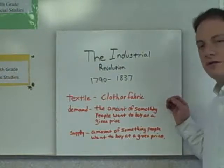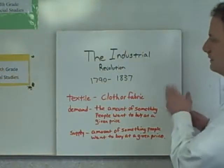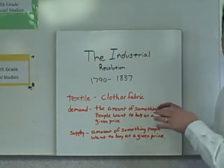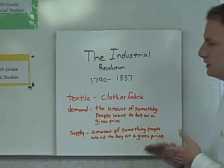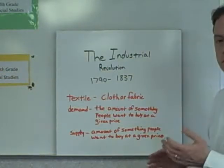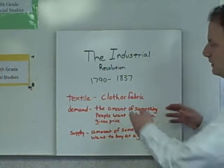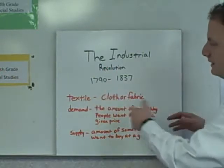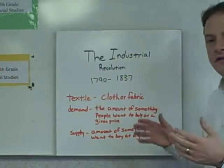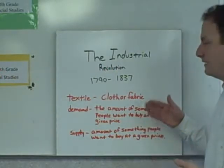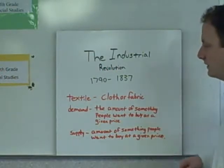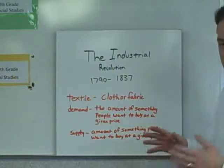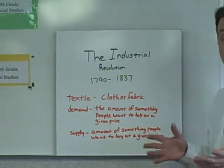In this lesson today we're going to be talking about the Industrial Revolution. The Industrial Revolution started in 1790 and lasted until around 1837. There are a couple of terms I want you to be familiar with in this lesson.